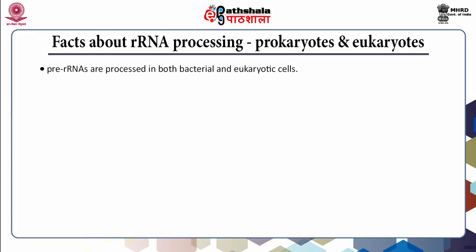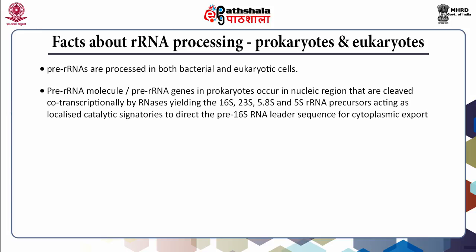In prokaryotes, the nucleoid is the locus of initial rRNA processing events, where RNases function to co-transcriptionally cleave the primary ribosomal RNA transcript yielding the 16S, 23S, and 5S precursors, thus serving as localized catalytic signatories to direct the pre-16S RNA 5' leader sequence region to the nucleoid.